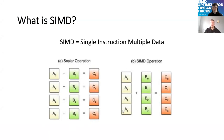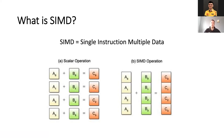SIMD operations allow you to add, or perform operations on values simultaneously. If you have some kind of vector or data structure, you can add all four elements in one go and get all four C results with one single operation — be it multiplication, division, bitwise operations and so on. SIMD is very rich and very fast when you want to do some optimizing.